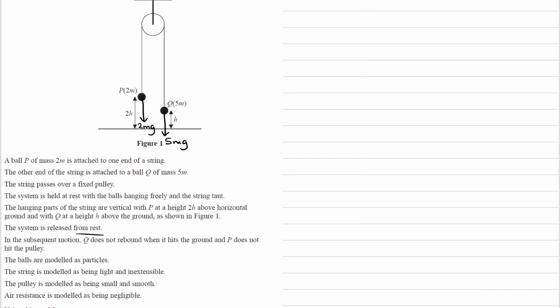The system is released from rest, and then Q hits the floor, and then P will continue to move upwards and it does not strike the pulley. And then we're given our modelling assumptions as well: the balls are modelled as particles, the string is light and inextensible, the pulley is small and smooth, and the air resistance is negligible.